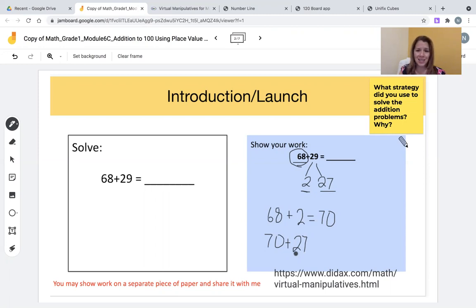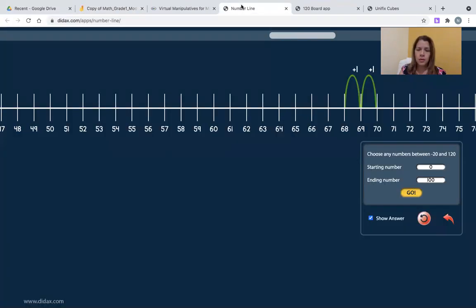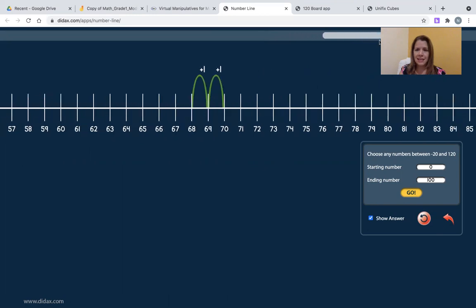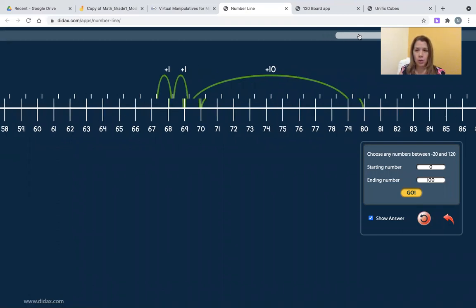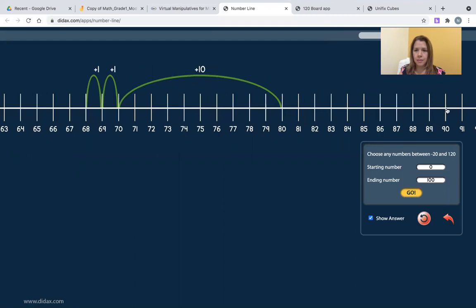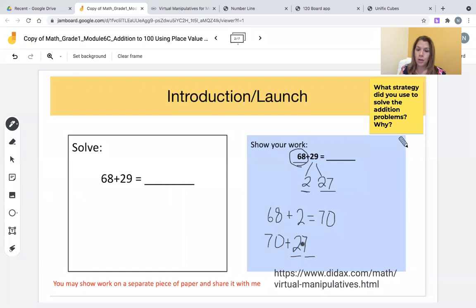On the number line, 27 will show as 2 tens and 7 ones. So here I am on 70, on this number line. Now I'll use the scrolling tool again and get to the next ten. So now I'm going to add 10. Here I have added one ten, but there are 2 tens in 27. I'll go to the next ten. Now I have 2 tens. I am now on 90.